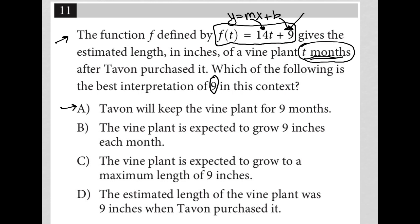Before it continued to grow on a monthly basis. So choice A says Tavon will keep the vine plant for 9 months. That's not my understanding of that 9. Choice B, the vine plant is expected to grow 9 inches each month. Nope, that would be the slope, and we know that's 14 inches per month. So B is gone.